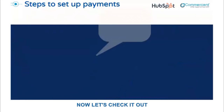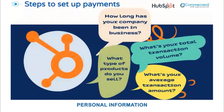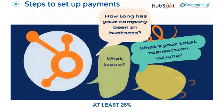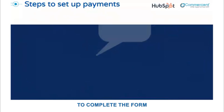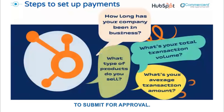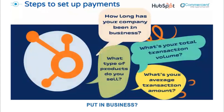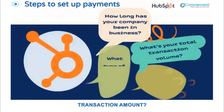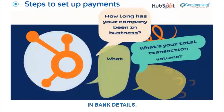Now let's check it out. To set up HubSpot payments, you'll need the company tax ID or EIN, plus the personal information for anyone who owns at least 25% of the company. You'll also need about 15 to 20 minutes to complete the form to submit for approval. The form will ask for information like: how long has your company been in business, what types of products do you sell, what's the average transaction amount, and the total monthly transaction volume. You'll also need to add in bank details.